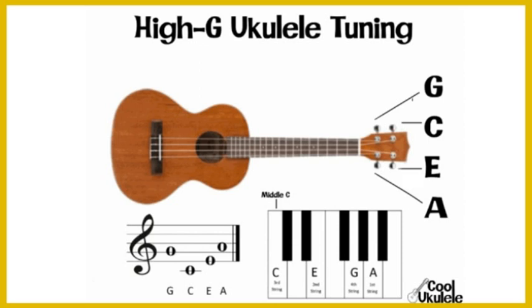The four strings on a ukulele from top to bottom are most commonly tuned to G, C, E and A, although there are other ways to tune a ukulele. This is the most commonly used around the world and therefore the most easy setup to find music for.